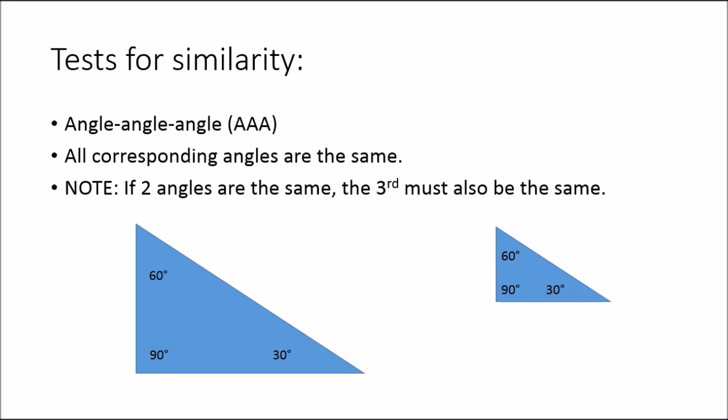One thing to remember as well with triangles is because we know that the total of the three angles adds up to 180 degrees, we don't actually need to know all three. As long as we know two of the corresponding angles, we can figure out what the third one is. So even if we didn't know that this was 30, and that this was 30, we'd be able to work that out from the other two angles to establish that they were similar.